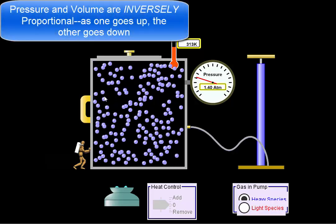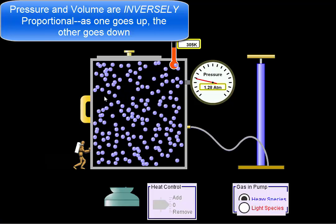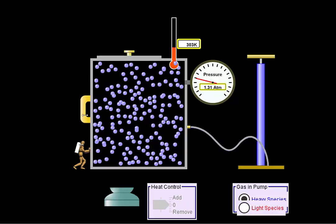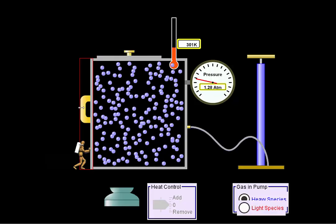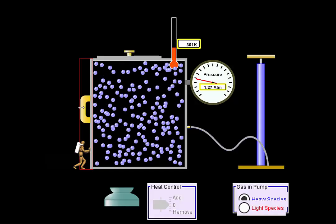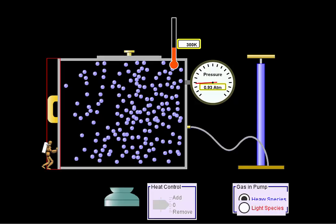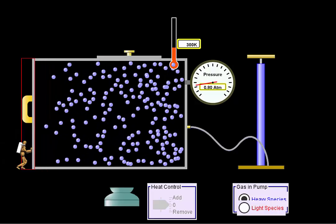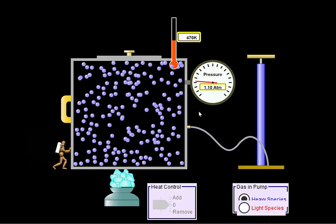That relationship is what is called inverse, which means as one goes up, the other goes down. They are opposites to each other. And the whole time, notice my temperature has remained constant. So temperature has not affected this whatsoever. So let's see that one more time. So if I make my volume big, my pressure goes down. When I make my volume small, my pressure goes up.